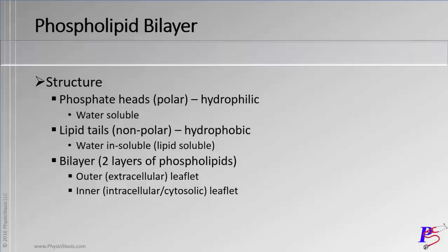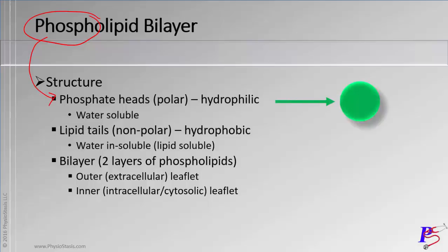If we take a look at this word, it has two portions. The first portion has to do with phosphate, and that is the head of the phospholipid layer. The head is polar, meaning that it is attracted to water — hydrophilic, meaning water-loving, or it likes water. Another way of saying this is that it is water-soluble.